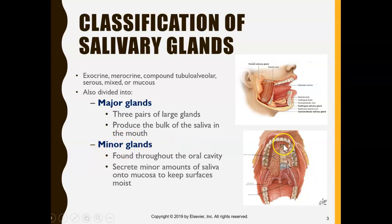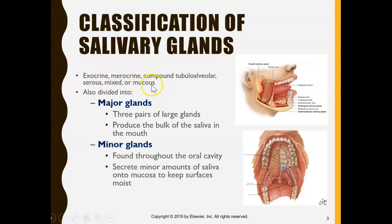We also have minor glands spread throughout the mouth — you can see some on the palate — and these glands also secrete saliva. Saliva can have different consistencies: serous saliva is thin and watery, mucus saliva is thick and sticky, and mixed saliva is where glands secrete both thin and thick saliva.